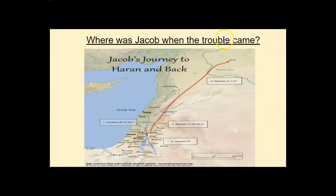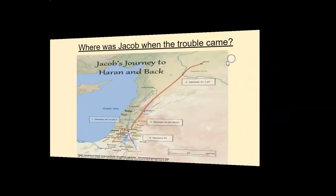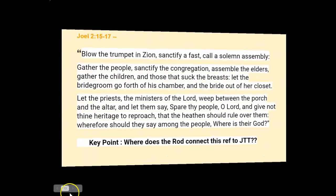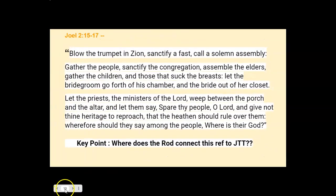Sometimes visuals are really helpful. Here is Laban's land, where Jacob spent 20 years with his wives and family before beginning his return journey.